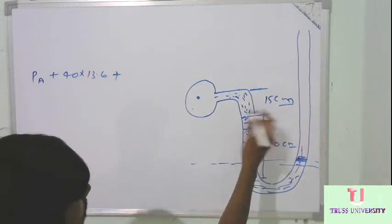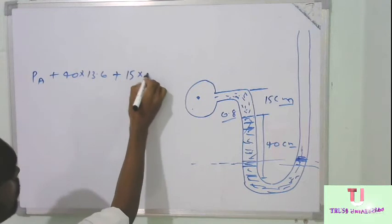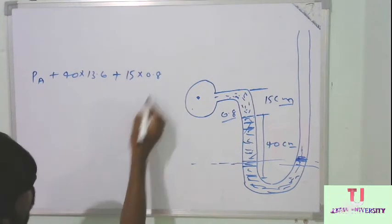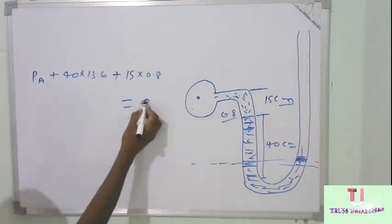And now this is 15 cm, and the specific gravity given is 0.8, so 15 into 0.8. And now this is equal to, in this side there is nothing, zero. So that is equal to zero.